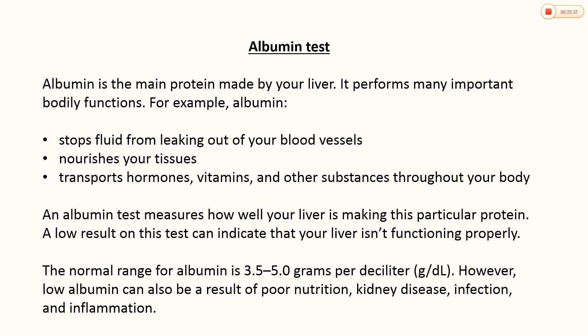Albumin stops fluid from leaking out of blood vessels, nourishes your tissue, and transports hormones, vitamins, drugs, and other substances through your body. An albumin test measures how well your liver is making albumin, and a low level indicates the liver is not functioning well. The normal range of albumin is 3.5 to 5 grams per decilitre; however, low albumin can also result from poor nutrition, kidney disease, infection, or inflammation. Alkaline phosphatase is an enzyme found in bones, bile ducts, and the liver. High levels may indicate liver inflammation, blockage of bile ducts, or bone disease; children and adolescents may have higher levels due to bone growth, and pregnancy can also increase alkaline phosphatase. The normal range is 120 units per litre in adults. Thank you very much.